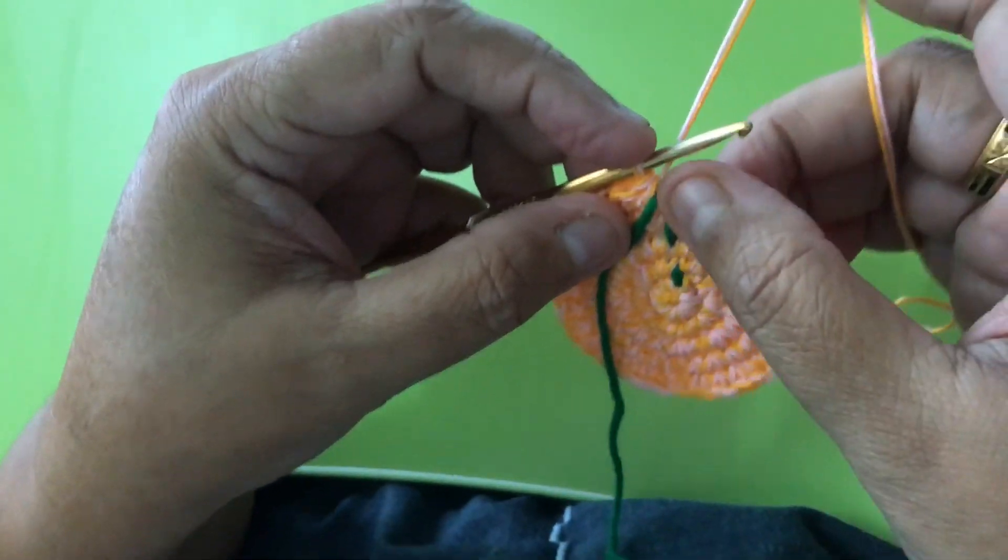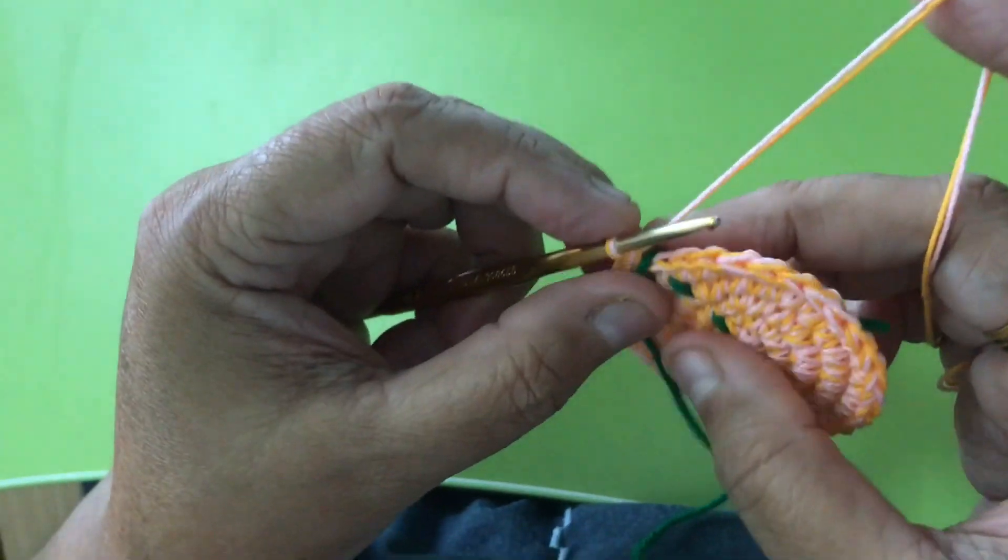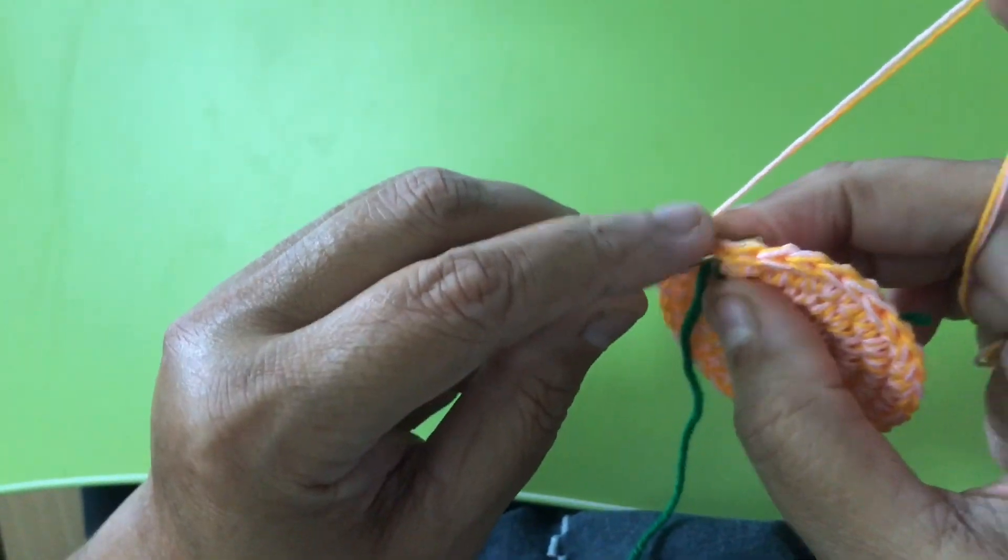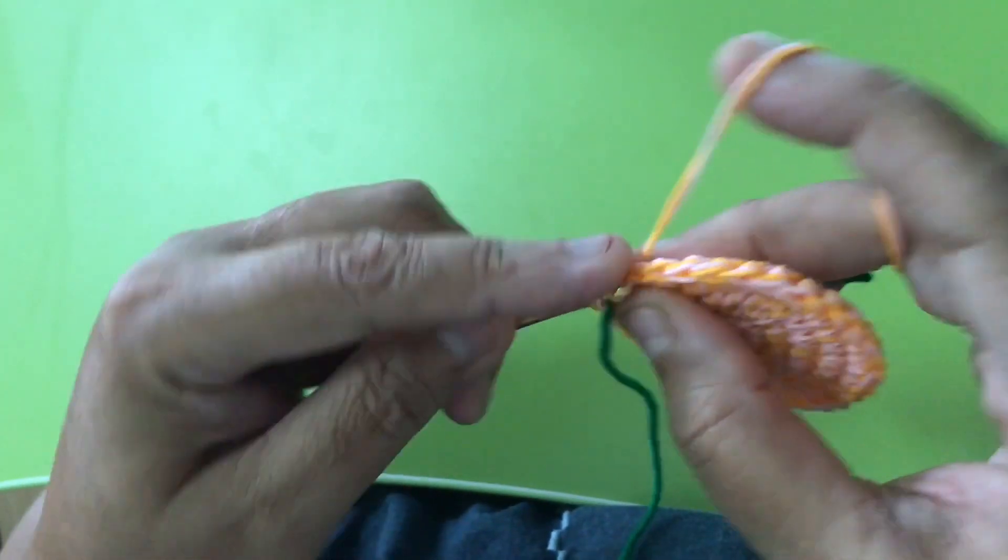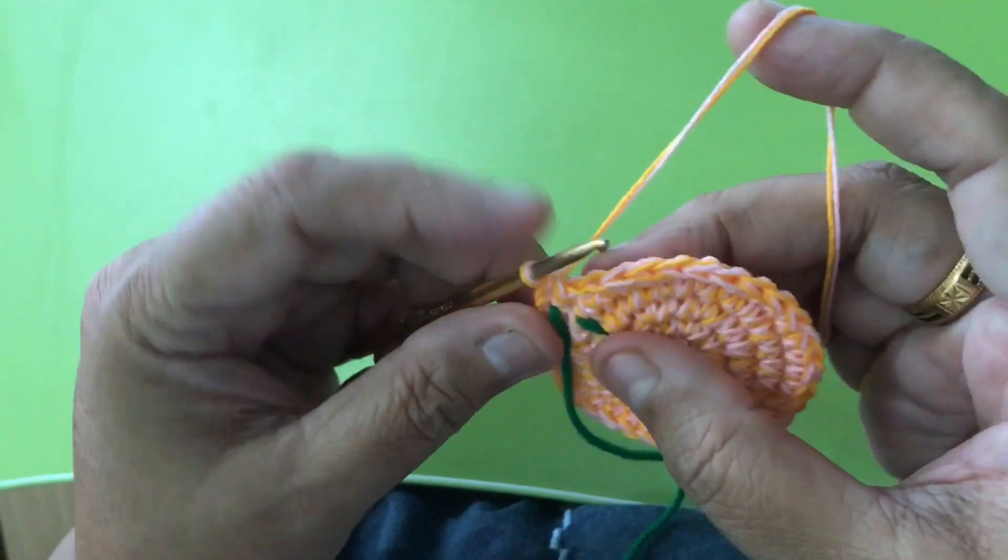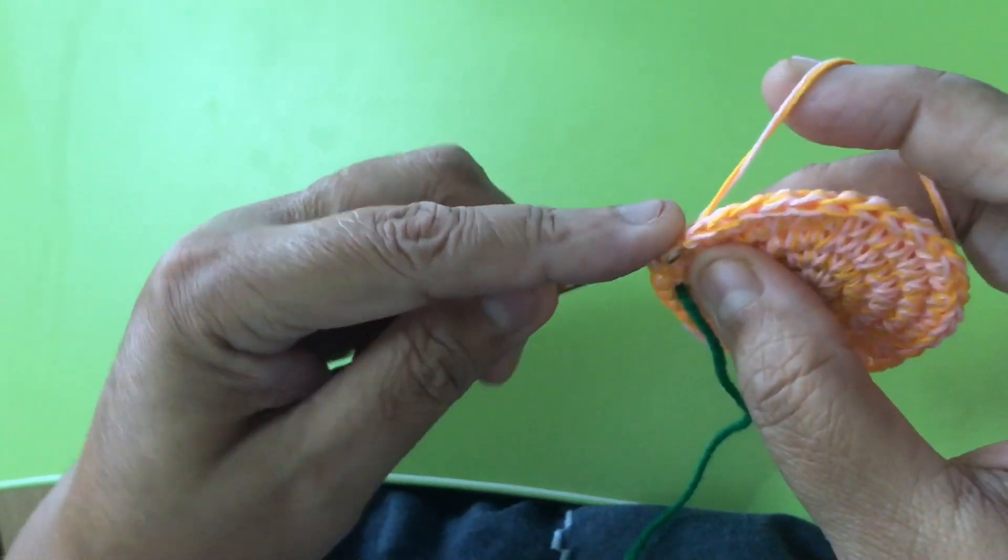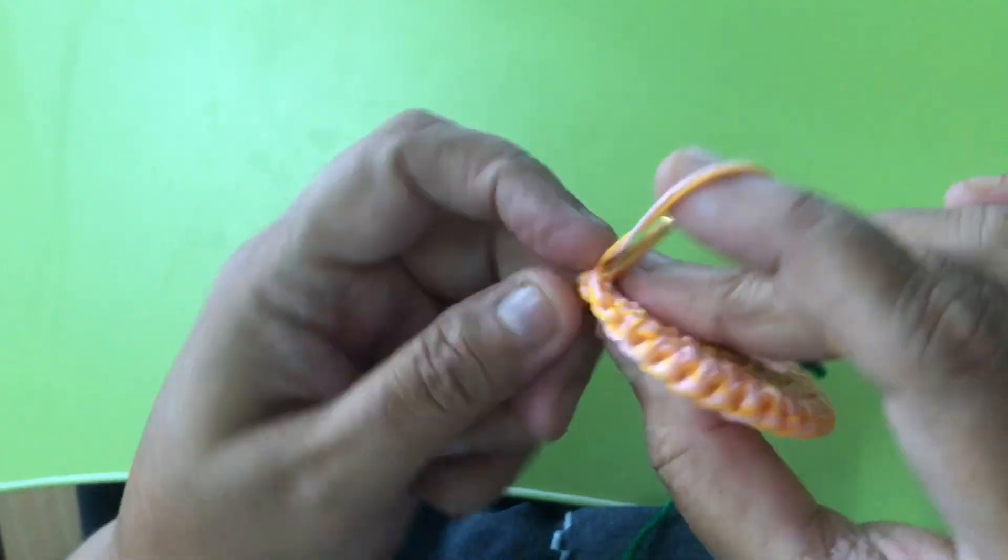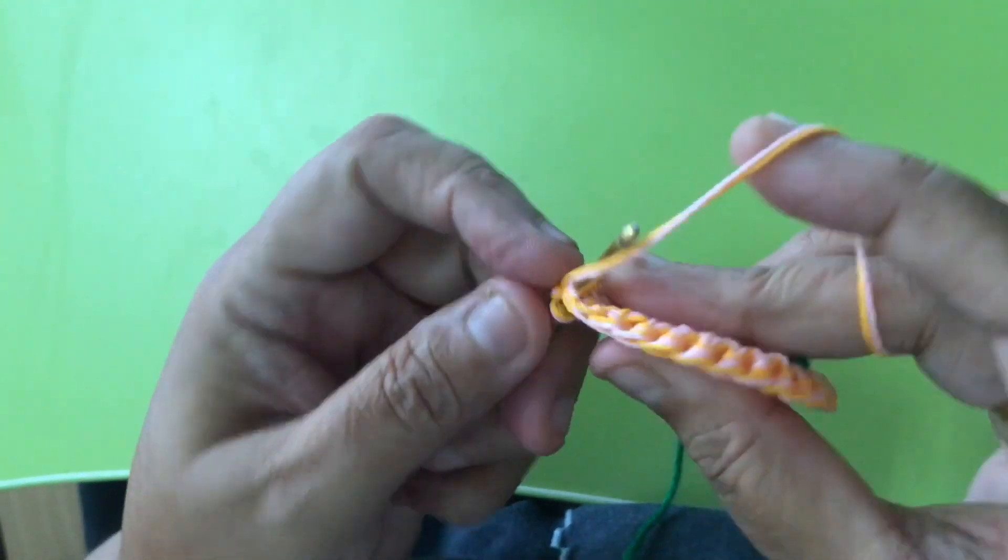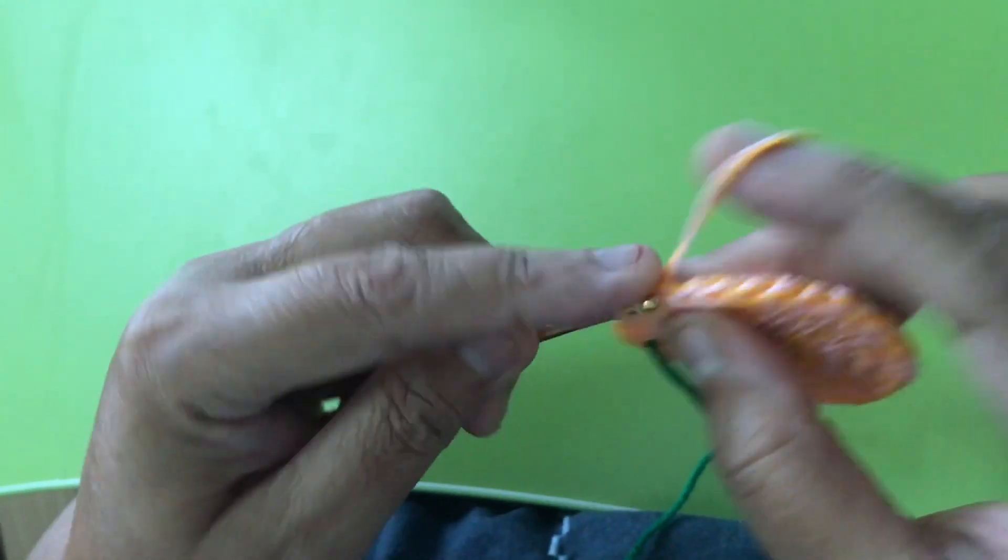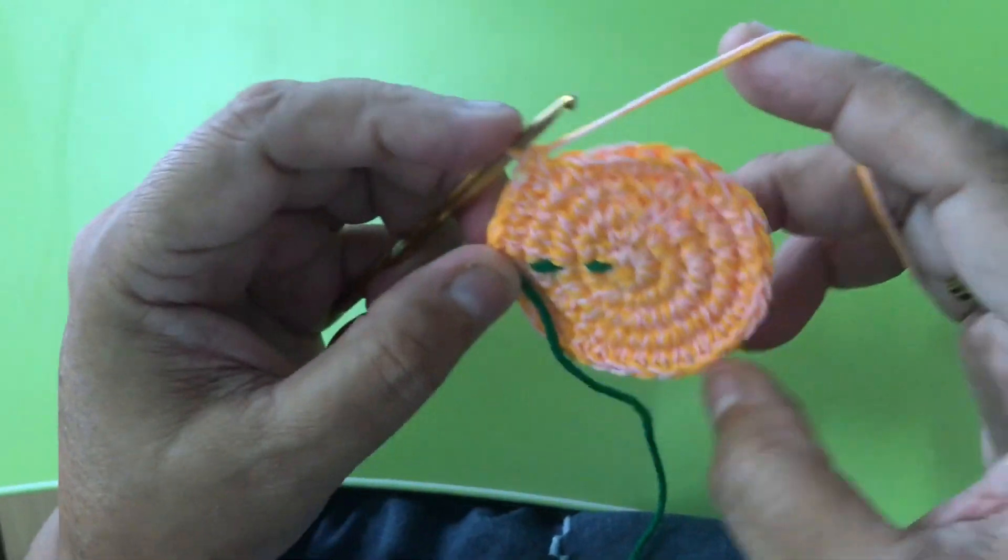Round five was all single crochet, no increase, no nothing. So now round six, increase here and then go to three. Three, two, three, then increase. I did this one ready, so you've got seven more to go.